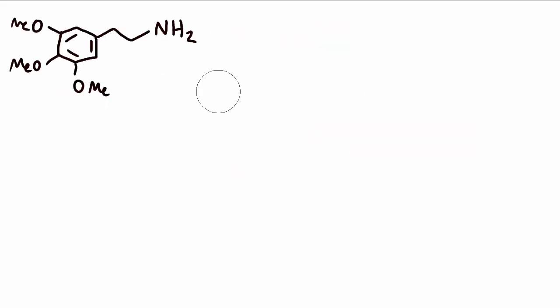Now mescaline is a simple enough compound that as well as asking simply how can we make this, we can also ask the question what are the different ways in which this can be made, and what are the relative advantages and drawbacks of the different routes you might choose.